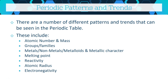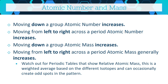Now let's look at patterns and trends in the periodic table — a key part of how the periodic table was formed. We want to examine: atomic number and mass, groups and families, metals/non-metals/metalloids and metallic character, melting point, reactivity, atomic radius, and electronegativity. We'll go through each and see how these properties change as you move from one point to another.